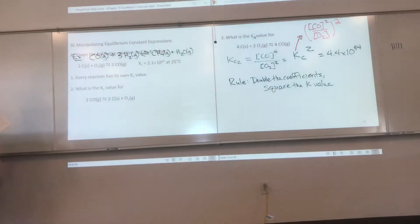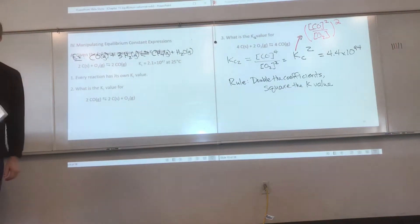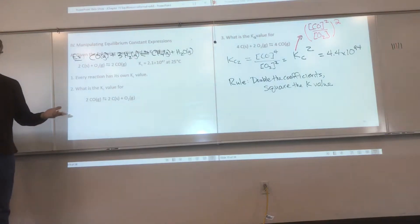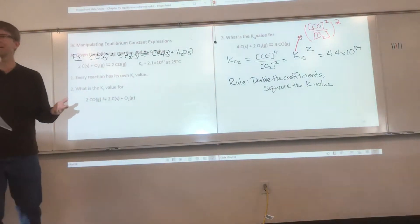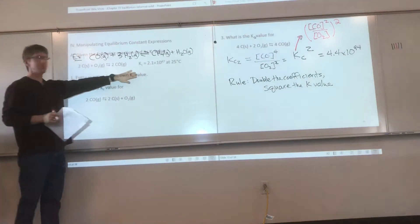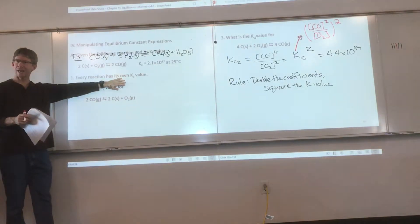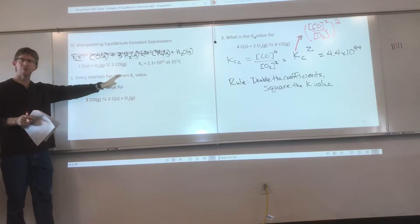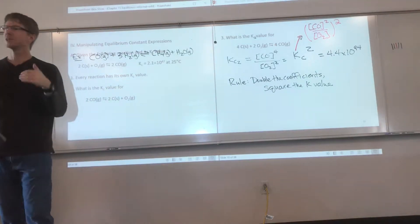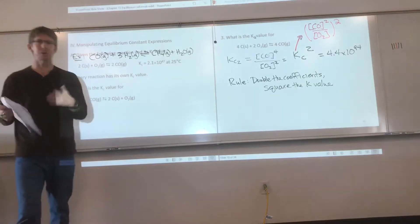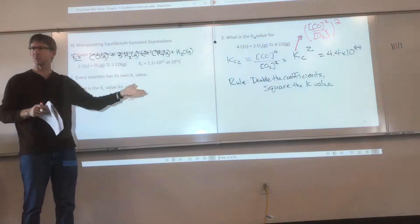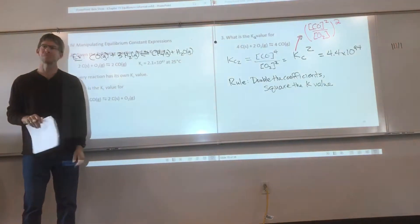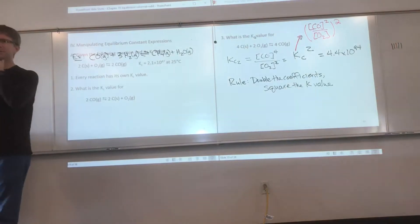Dylan asks: if we triple the coefficients, it would be cubed? Yes. If we halve them, they'll be square rooted. If you remember Hess's law, we did some halving of coefficients last semester. Basically all the same manipulations we did for Hess's law, we will do with equilibrium constants as well.